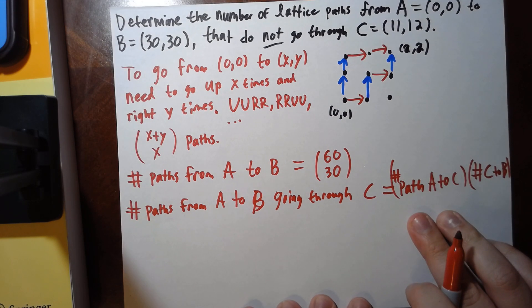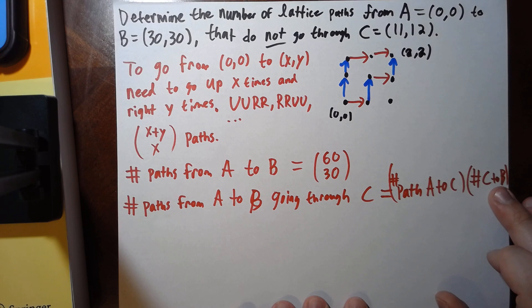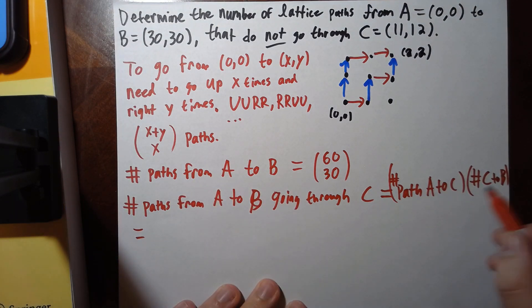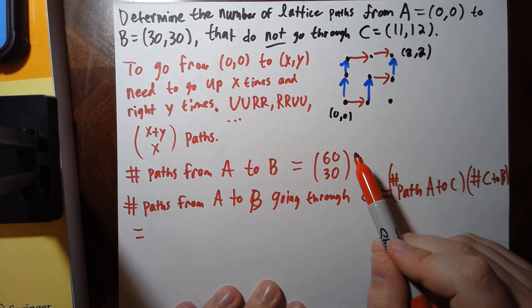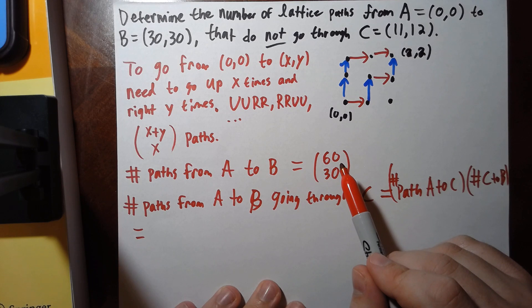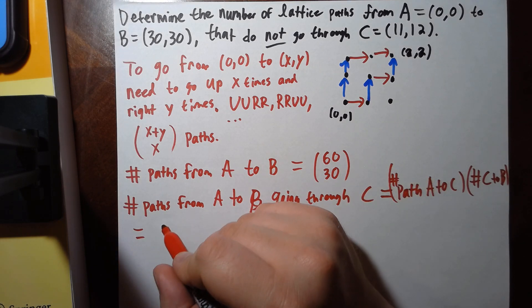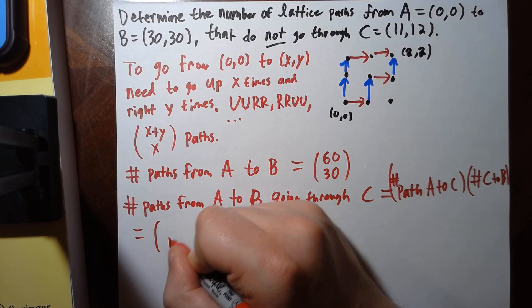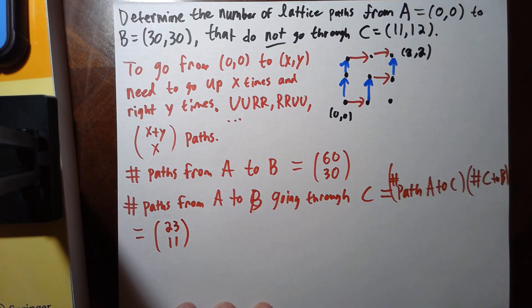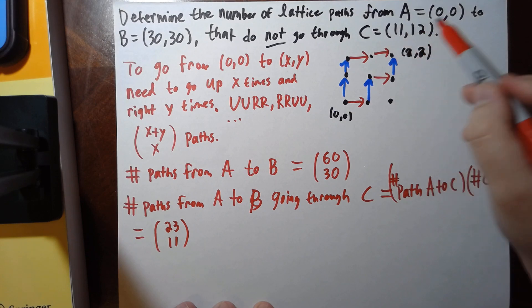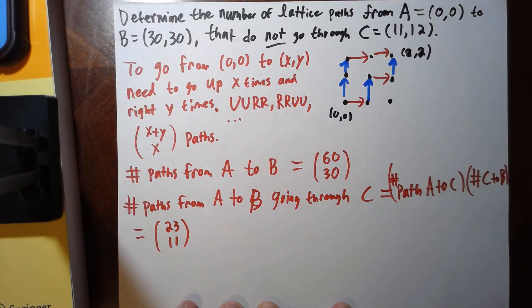Well, there's this many ways to get to C from A and this many ways from going from C to B. And this number going from A to C is going to be—well, it's 11 plus 12 choose 11. So that's going to be (23 choose 11). But then the question is going from C to B.